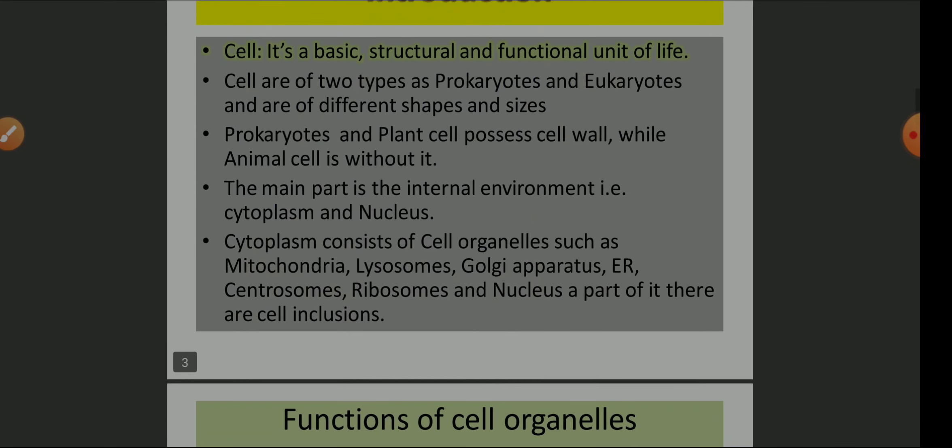Cell is a basic structural and functional unit of life. This is a pretty simple definition found in almost all books. You have also studied about types: prokaryotes and eukaryotes. Prokaryotes are very primitive — 'pro' means first, 'karyon' means nucleus — and eukaryotes are very well developed cells. Prokaryotes are basically bacteria; they are unicellular. But there are eukaryotes which are also unicellular, for example paramecium and amoeba.